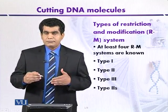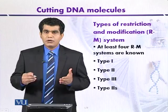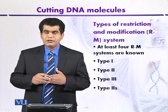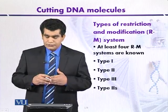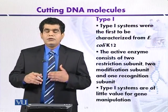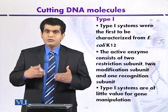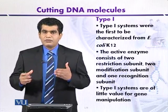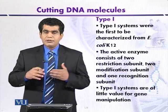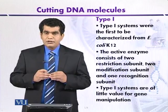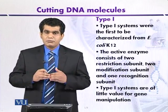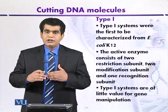Sometimes a fourth type can also be recognized in some microorganisms. Now, type 1 system was the first one to be elucidated or discovered from E. coli K12. As we discussed earlier, from the standpoint of gene manipulation procedures, it is not so important.